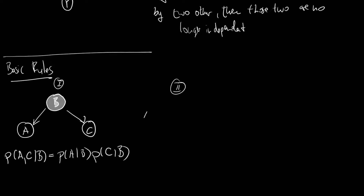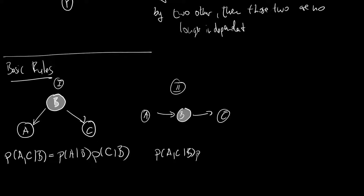The second rule: again we have A and C, and we observe B, but this time A is causing B and B is causing C — or the same the other way around. Since we know B, C is only caused by B, and since we know B we know how C will be caused — so there is no relation between A and C. Therefore P(A, C | B) = P(A | B) × P(C | B).